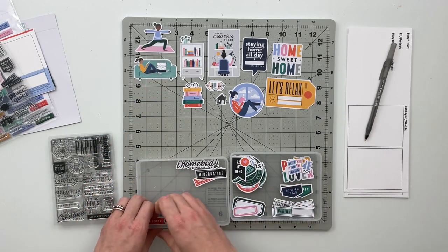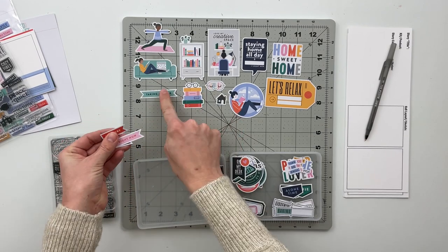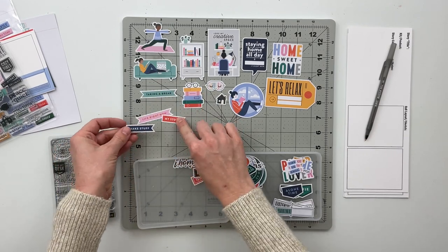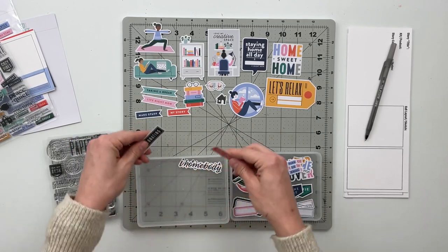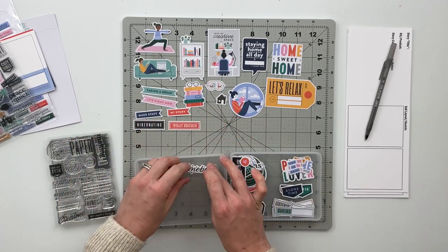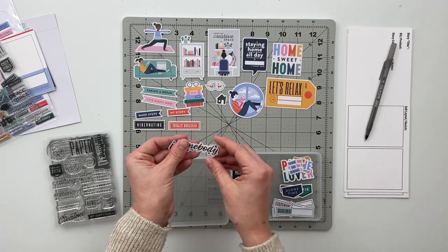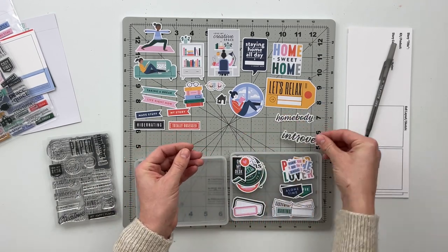We've got some banners that say taking a break, life right now, my story, make stuff. These ones are totally obsessed and hibernating. We've got a couple of word pieces that say homebody and introvert.